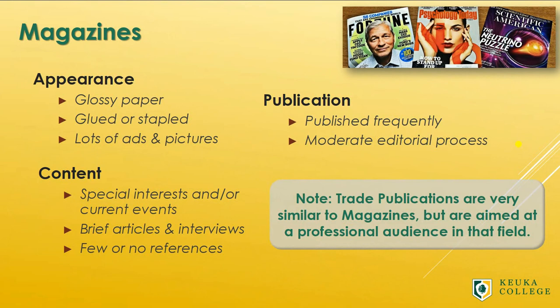Magazines are similar to newspapers in a lot of ways. They tend to be on glossy paper and have a lot of color, pictures, and ads. They cover special interests, such as business, science, fashion, or politics. They're also published a little less frequently than newspapers, like monthly or seasonally.